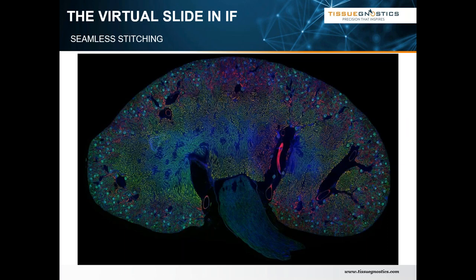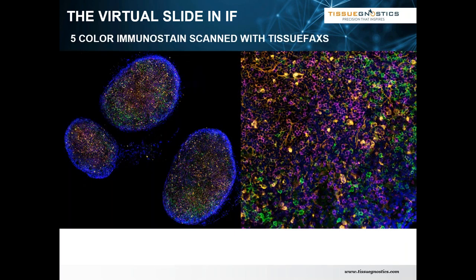This is a mouse kidney — you can barely see any stitching artifacts. Multiplexing is also possible. A five-color immunostain is seen here and stitching artifacts are rare.